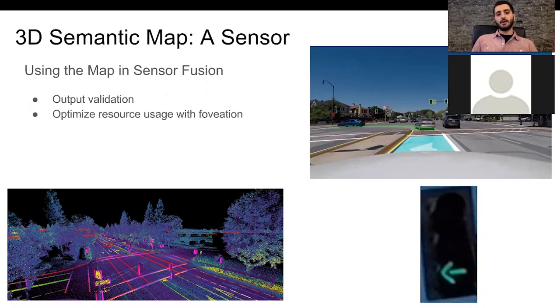We can do a validation of our output. On the top right of the slide you see a video camera frame where we've had a neural network which is responsible for extracting signals or signs. We've had that network go through the image and label different pixel areas as signals. What we can do then is look into our map and validate that our detection is indeed correct.